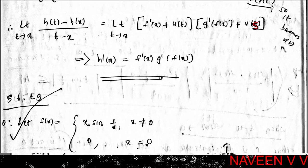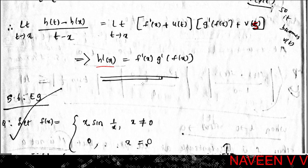Therefore limit t→x of [h(t) - h(x)] / (t - x) = f'(x)·g'(f(x)), which means h is differentiable at x and h'(x) = g'(f(x))·f'(x). This completes the proof of the chain rule.